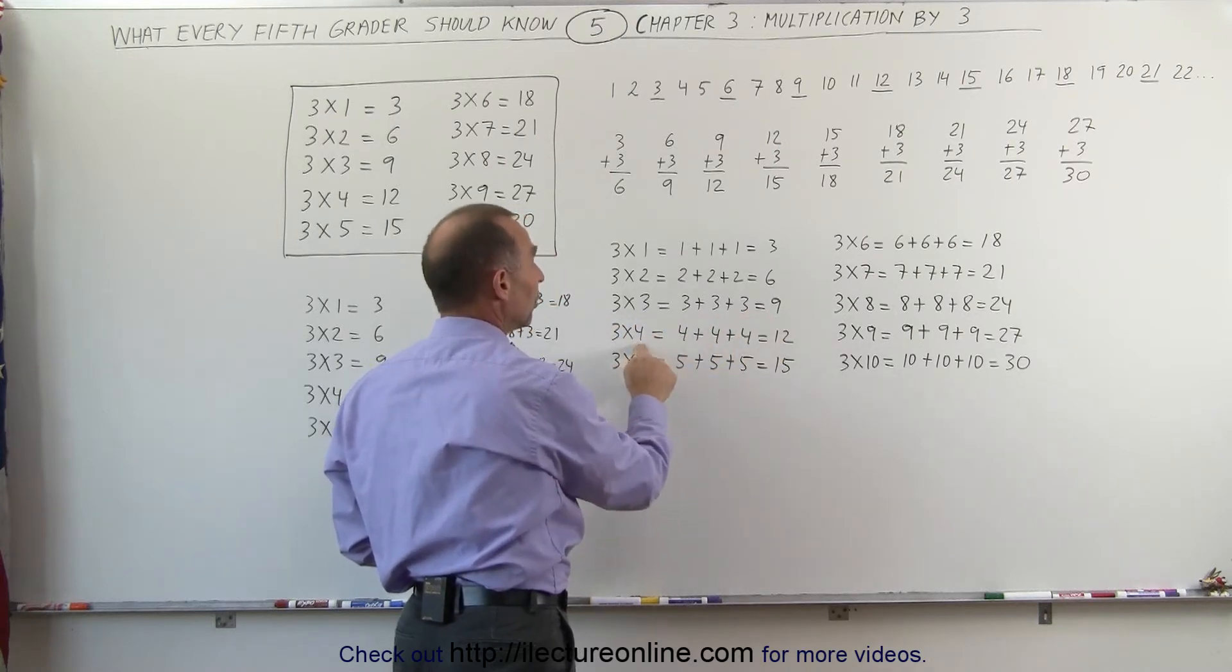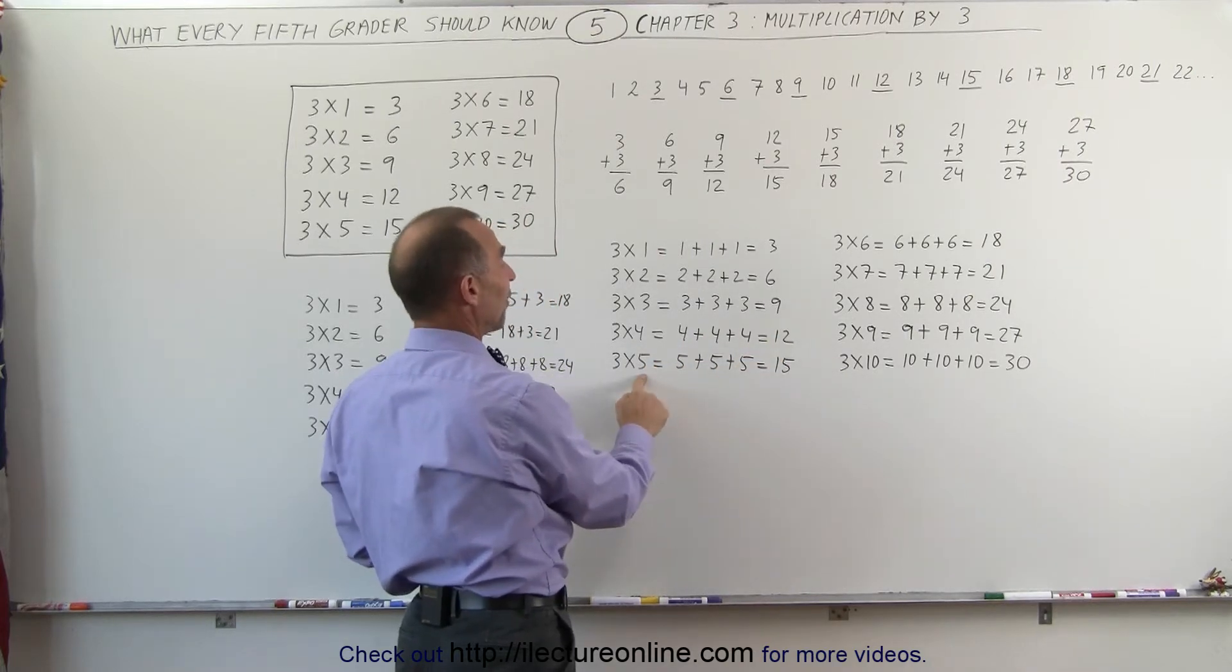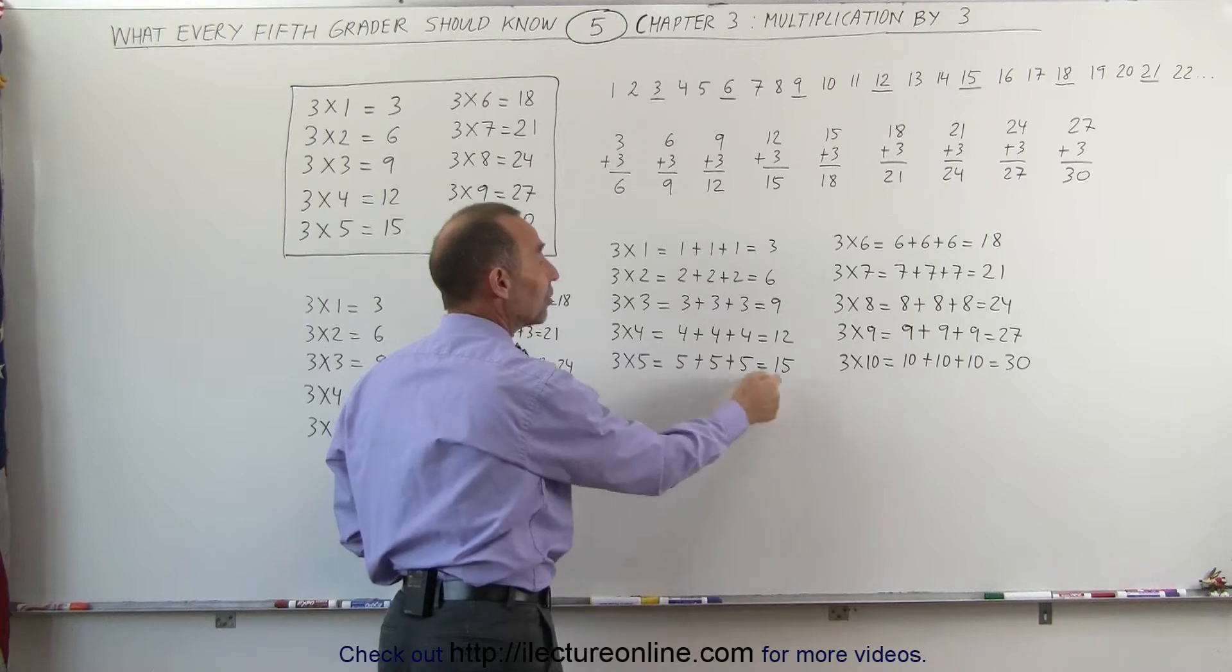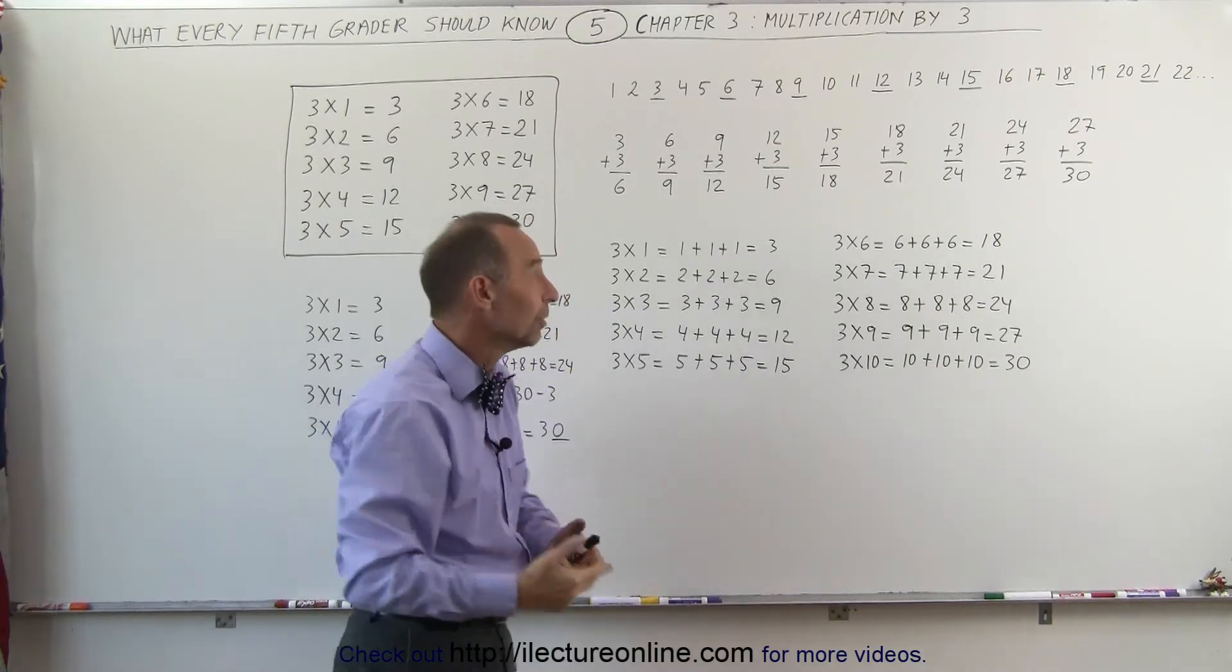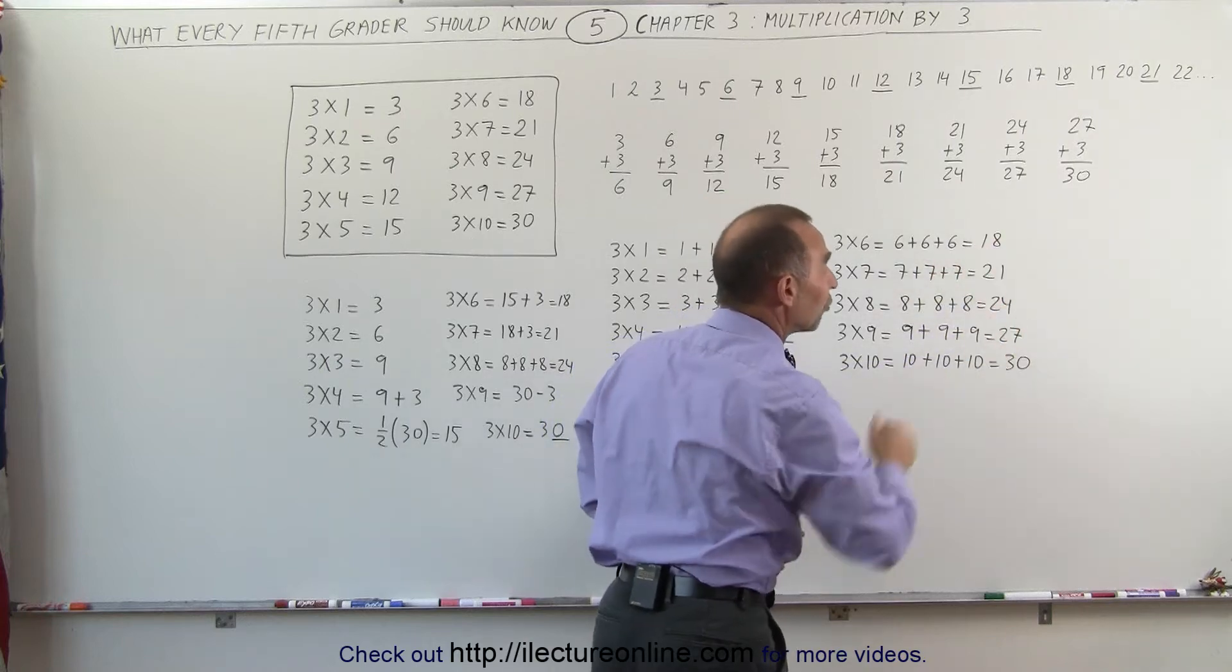3 times 4, 3 fours, add them together you get 12. 3 times 5 you have 3 fives, add them together you get 15. And you see the pattern. 3 times 6, you have three sixes, add them together, you get 18 and so forth.